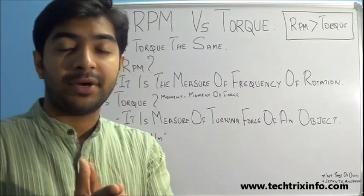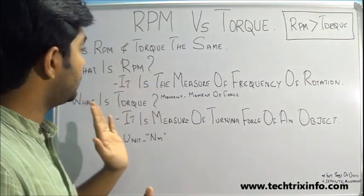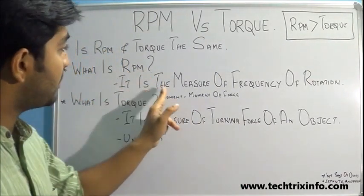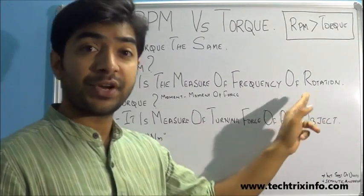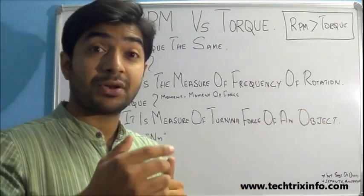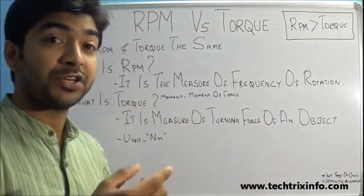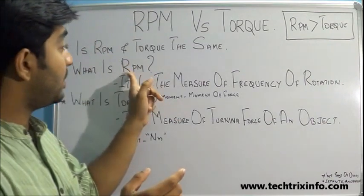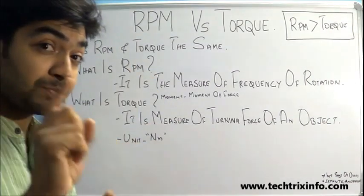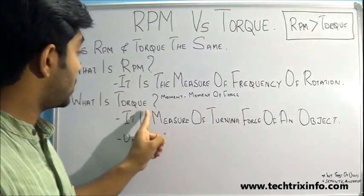RPM is the measure of the frequency of rotation — the speed of rotation. The full form of RPM is revolutions per minute. And what is torque?